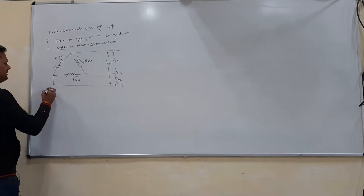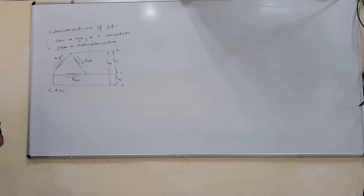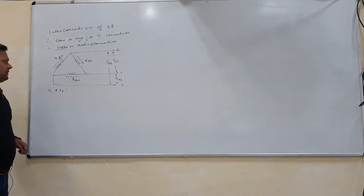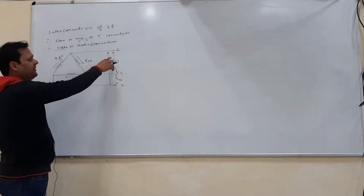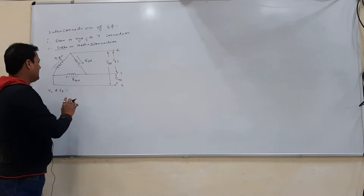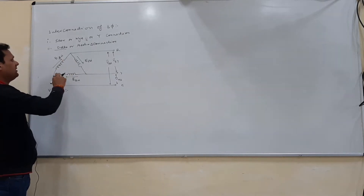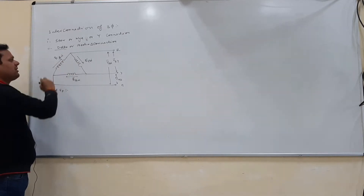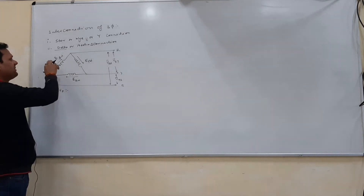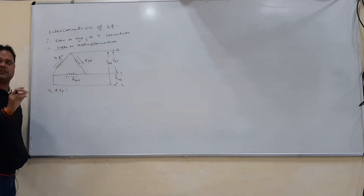The next topic is the relationship between the line voltage and phase voltage for a delta connection. The line voltages are VRY, VYB, and VBR, and the phase voltages are the voltages across the phases — ERN, EYN, and EBN. Since all are AC quantities, a small bar is kept over them to indicate that.